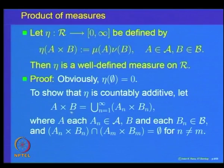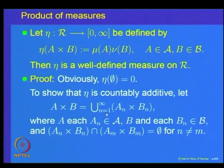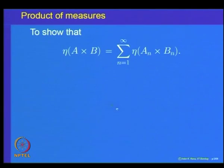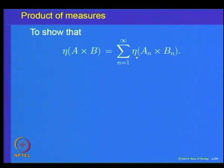So let us summarize. We have η defined on rectangles by η(A×B) = μ(A)·ν(B), and we have shown this is countably additive. Let me slowly go through the proof once again — there is only one small idea involved, and the rest is straightforward application of earlier results.